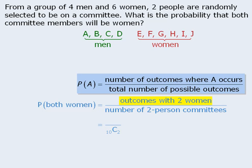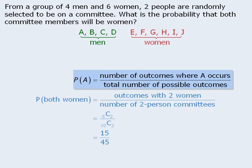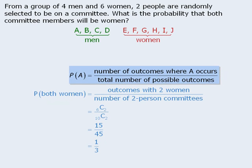For the numerator, we need to determine how many outcomes consist of two women. There are six women altogether, and we need to choose two of them. Since order does not matter, this is a combination question: 6-choose-2 ways. When we evaluate the two combinations, we get 15 over 45, which simplifies to one-third. So the probability is one-third that the two selected people will both be women.